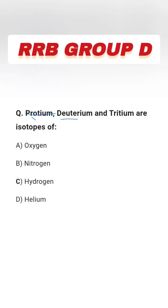Next question: Protium, deuterium, and tritium are isotopes of — options are oxygen, nitrogen, hydrogen, and helium. The right answer is option C, hydrogen. Protium, deuterium, and tritium are isotopes of hydrogen.